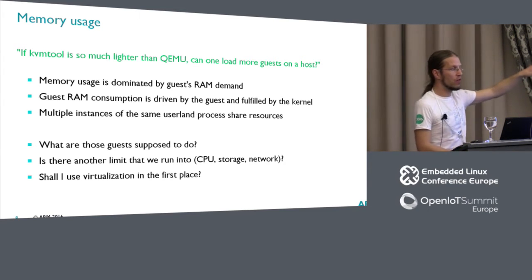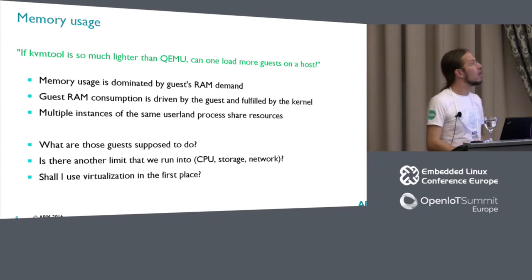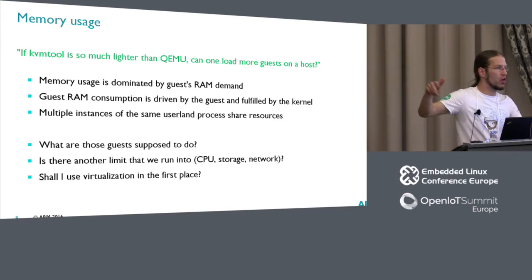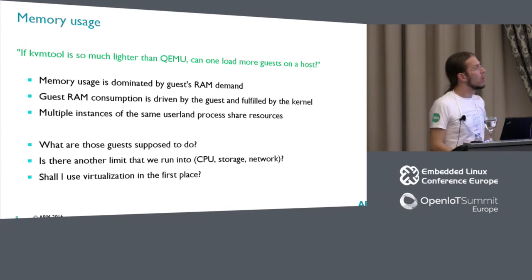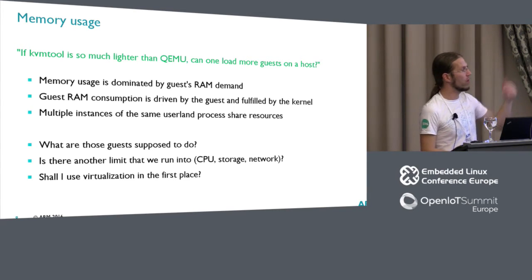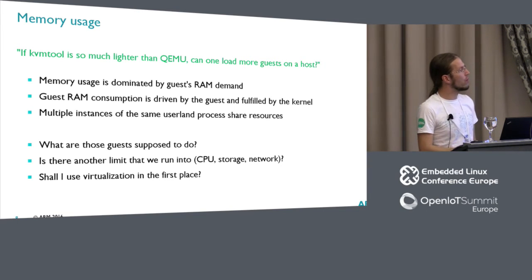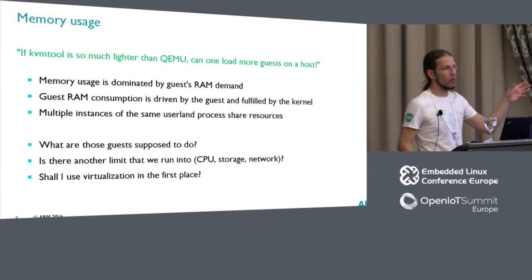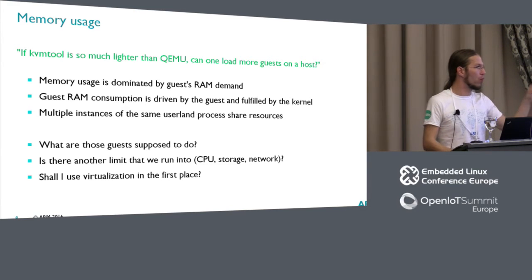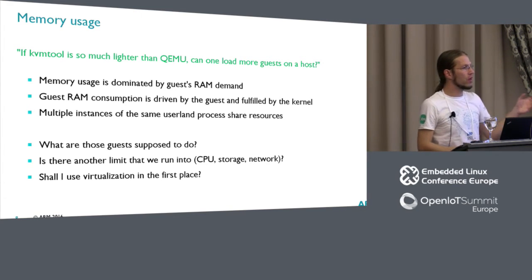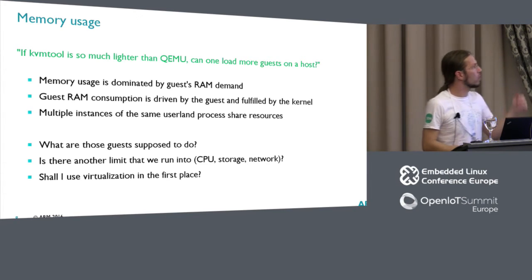User land just kind of allocates the memory — it reserves some virtual address space and hands it over to the kernel, saying 'here's the memory that the guest should see.' For performance reasons, you would hope user land is not involved in any kind of memory operation. Also, because QEMU is quite big — the binary is quite big, it uses a lot of libraries and memory — but if you start multiple guests, that shouldn't matter because all that memory is actually shared. The binary is only loaded once and then referenced multiple times, and same for libraries.